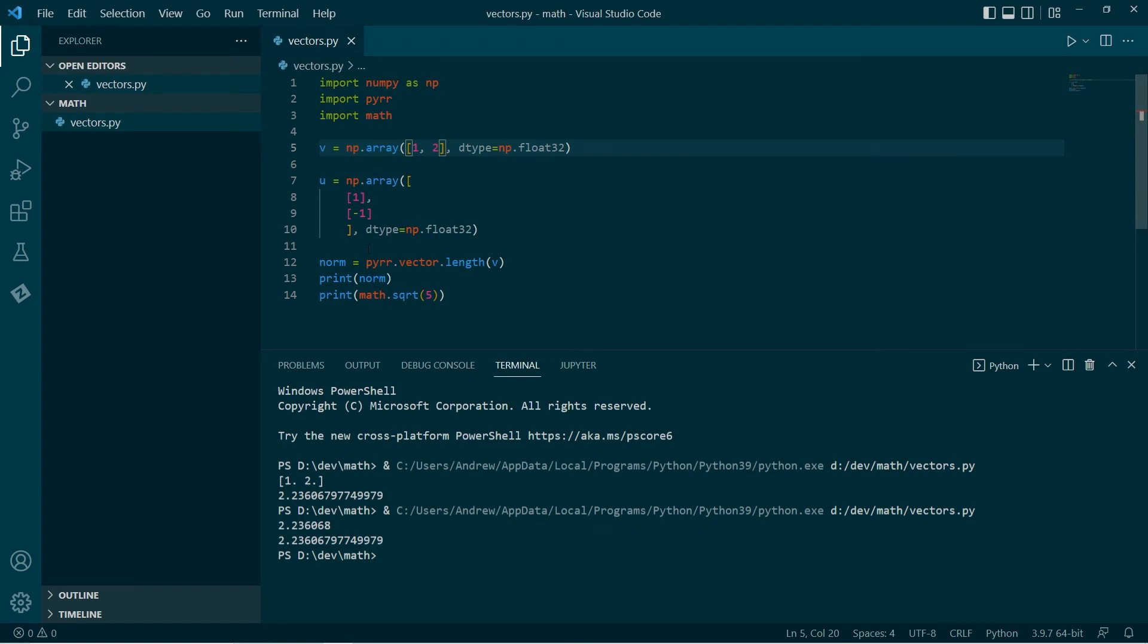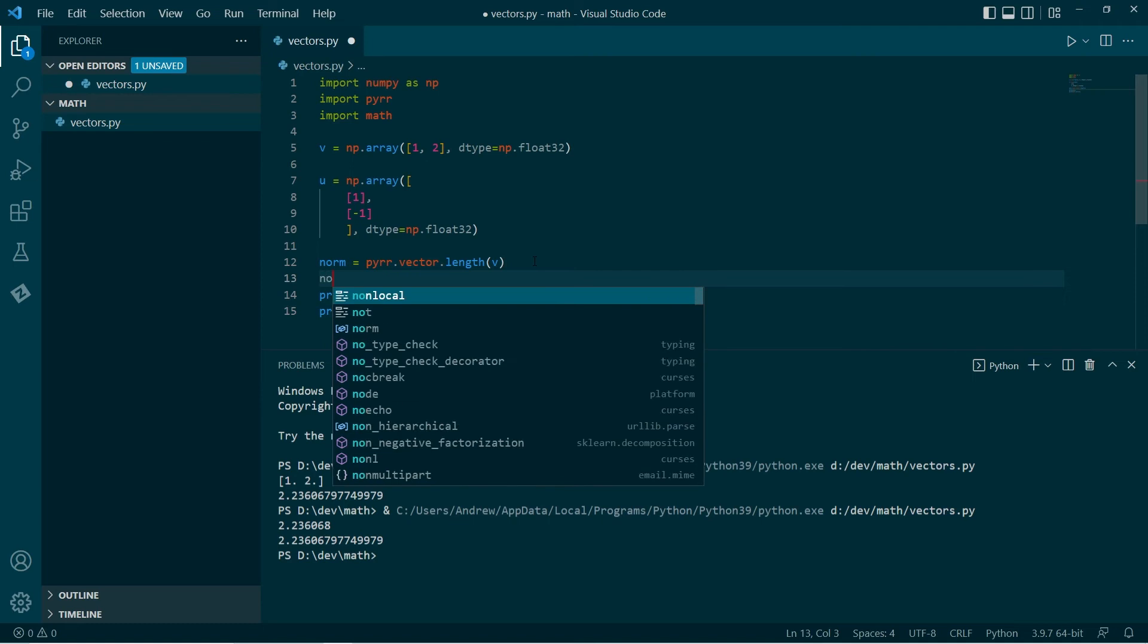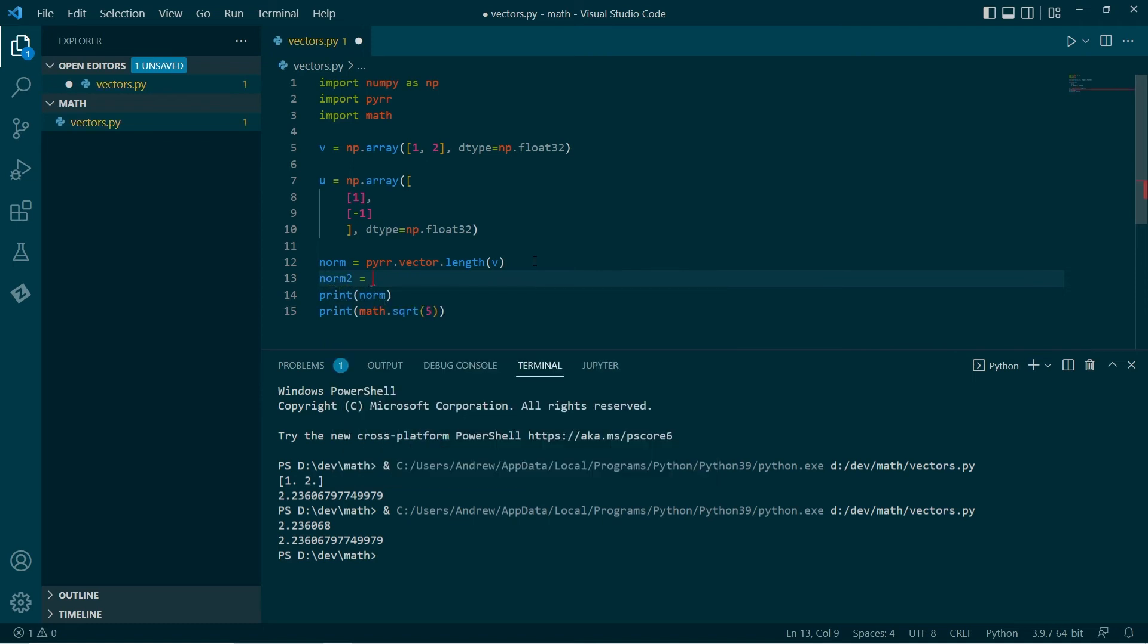So as we can see, we use the vector length operation that returns the norm, and we can also calculate this by hand.